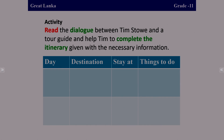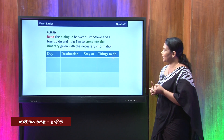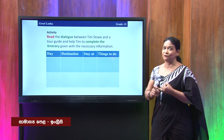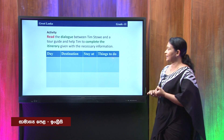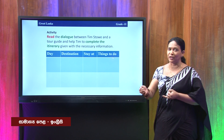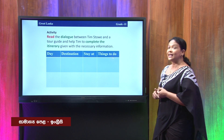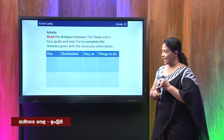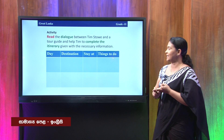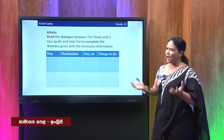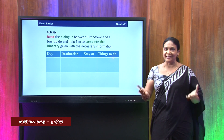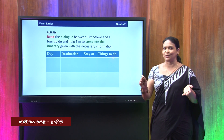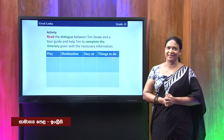So what are the headings? You need to find the day, then the destination where you are hoping to go, then 'stay at' — the place you are planning to stay — and then 'things to do,' which may be one or more. You have to read the dialogue and find out. Once again, what are we going to find? The day, destination, stay at, and things to do. If you can't remember, take your notebook and write the headings so you remember what to find.